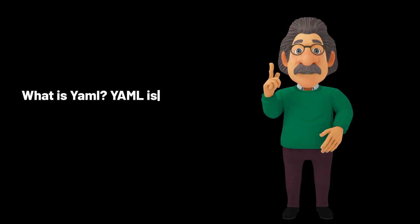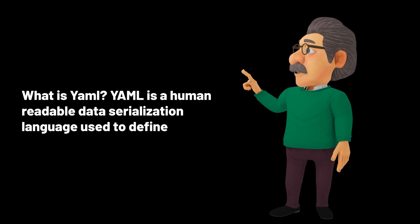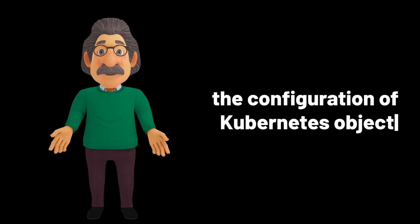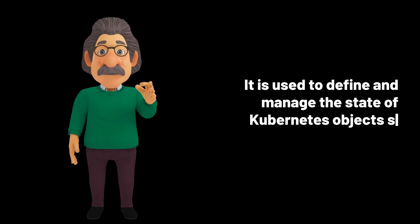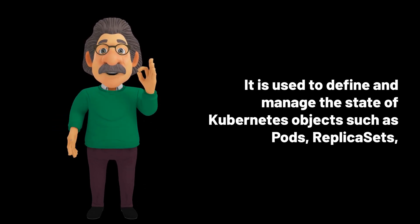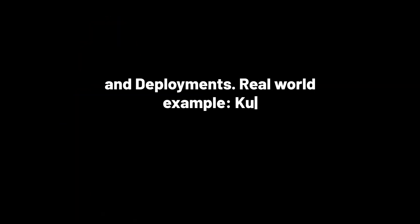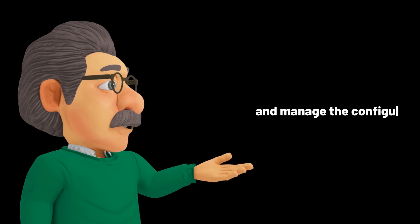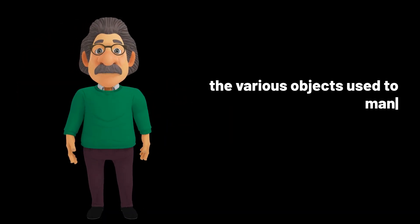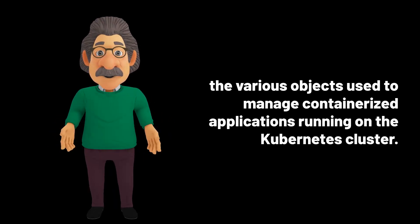What is YAML? YAML is a human-readable data serialization language used to define the configuration of Kubernetes objects. It is used to define and manage the state of Kubernetes objects such as pods, replica sets, and deployments. Real-world example: Kubernetes administrators use YAML to define and manage the configuration of the various objects used to manage containerized applications running on the Kubernetes cluster.